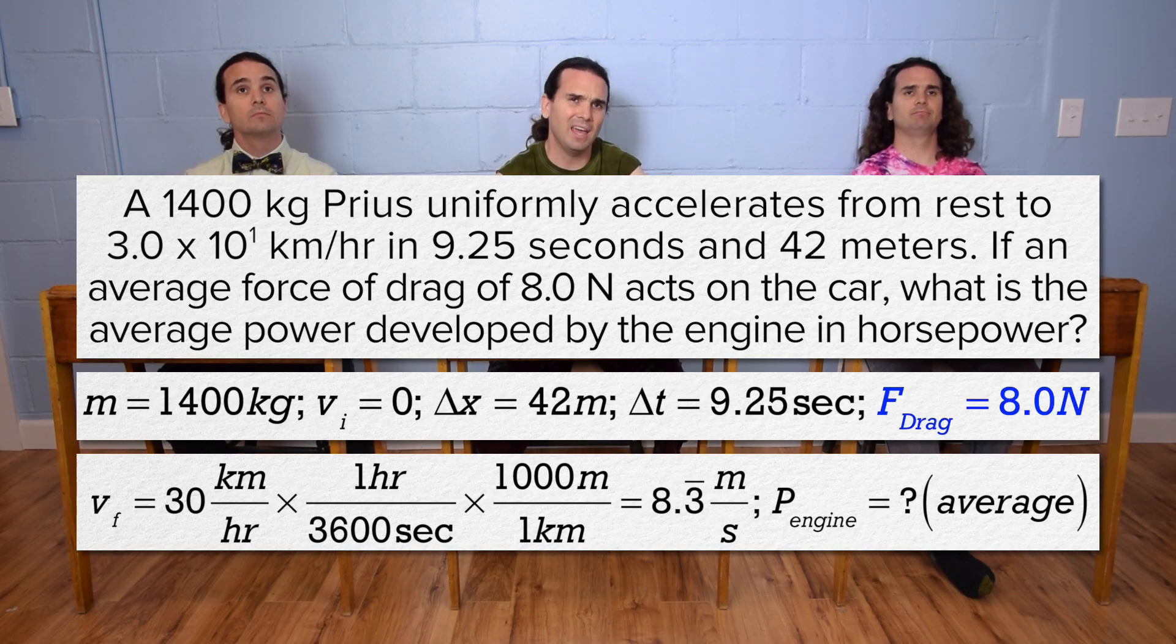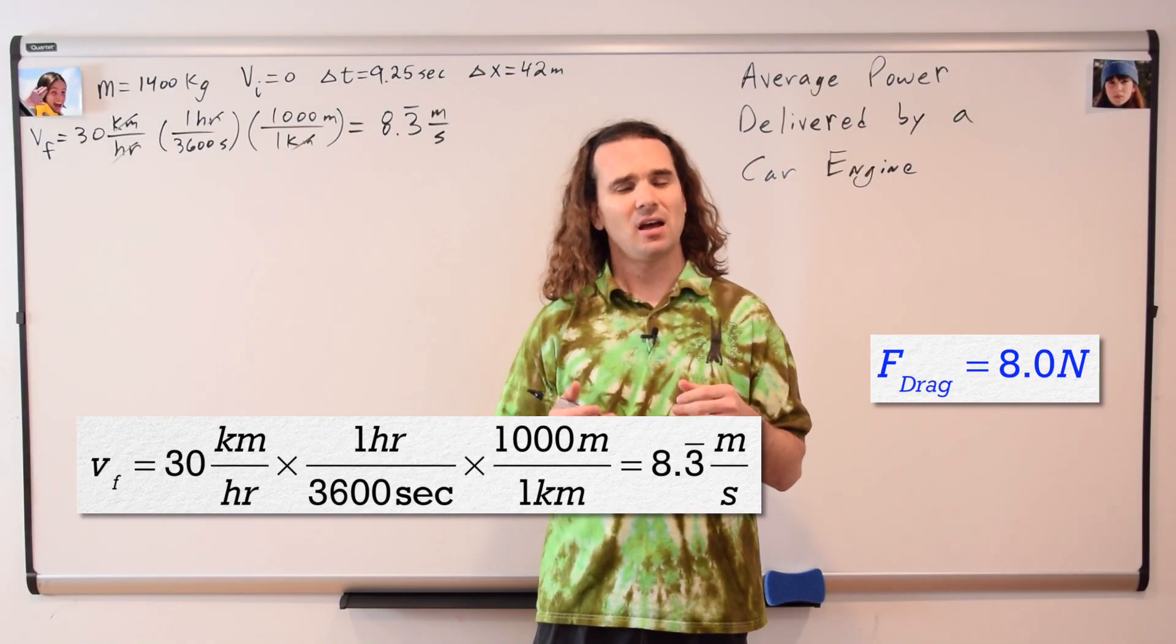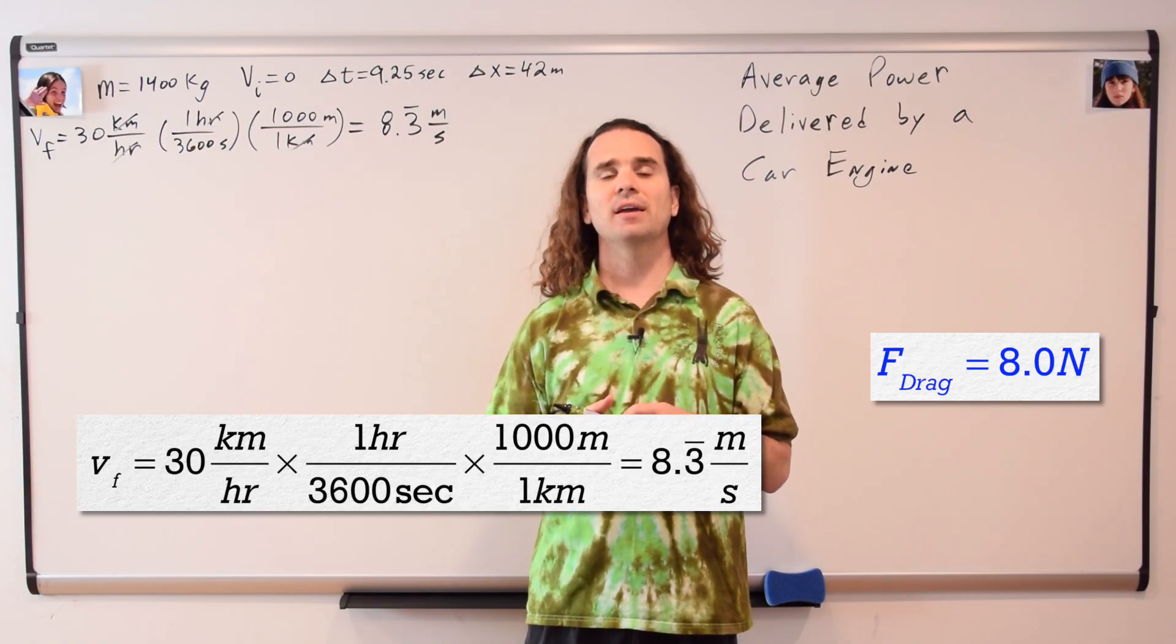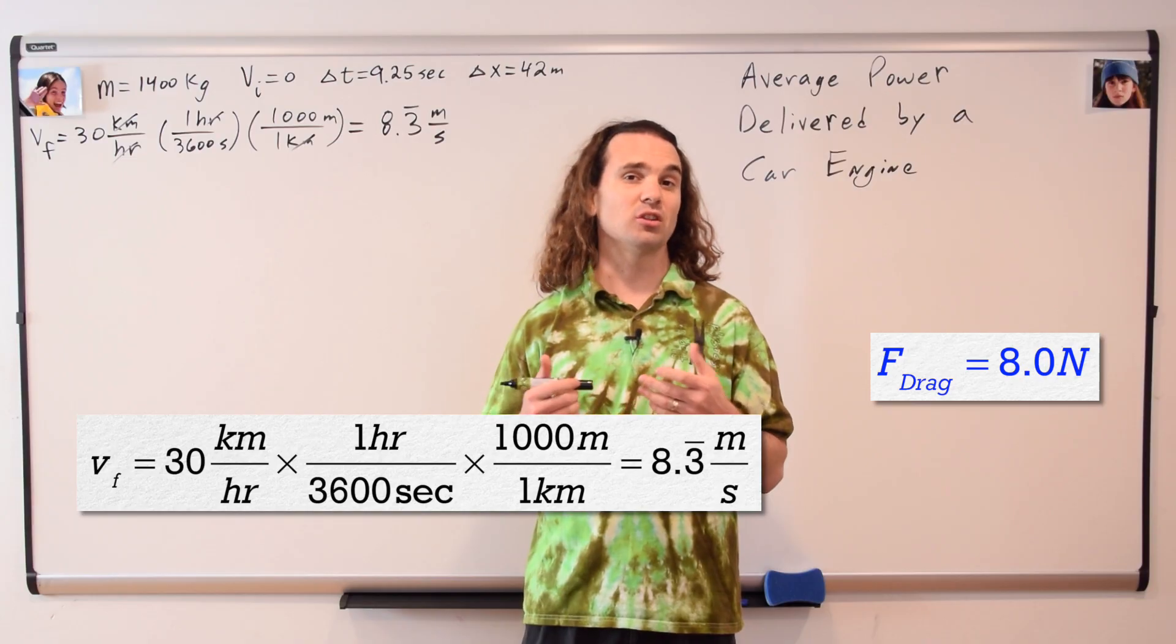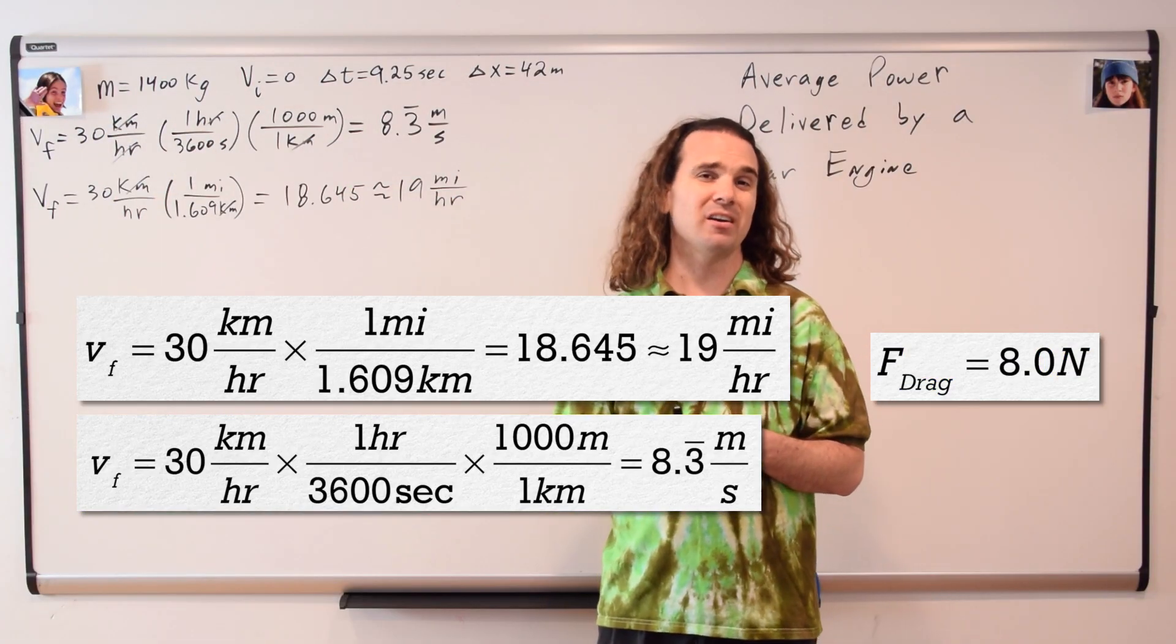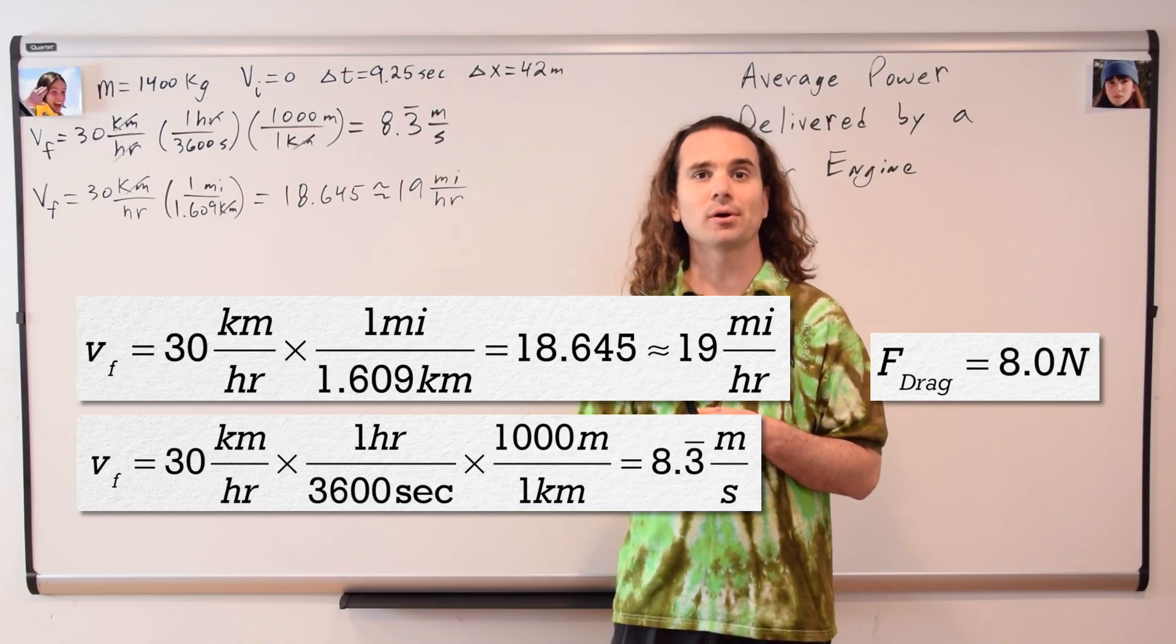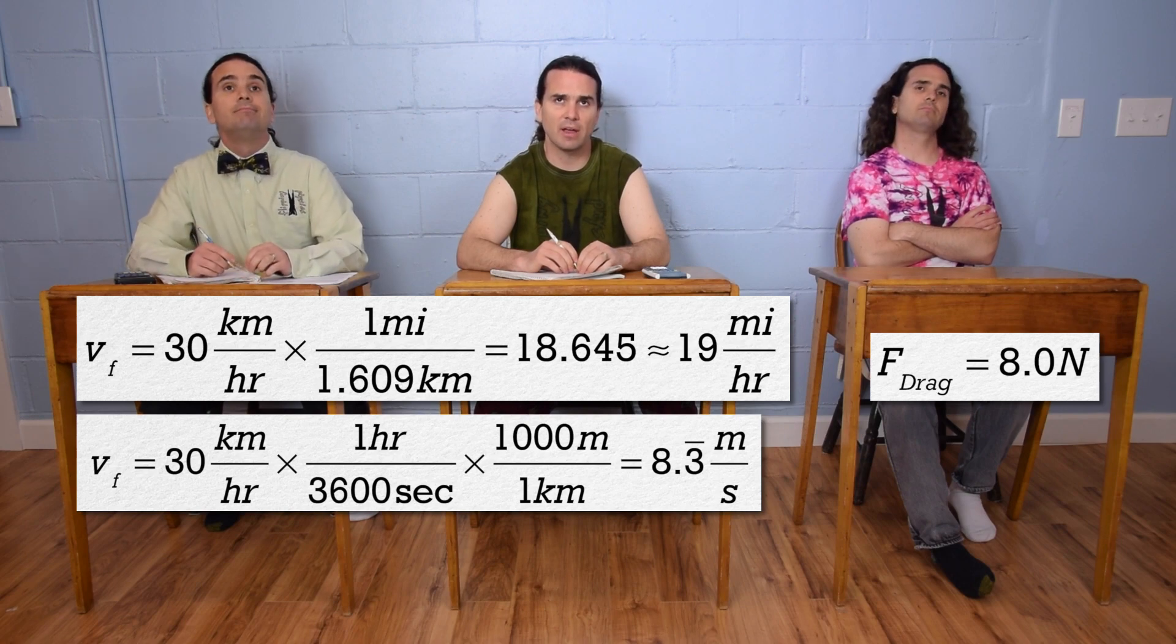A drag force of 8 Newtons seems really small. Is that really correct? Actually, yes. I have an entire video which describes exactly how I determined that average force of drag. The main reason it is so small is because of the car's low speed. The maximum speed of the car is 30 kilometers per hour which is roughly 19 miles per hour. Sure, the car is moving slowly so the force of drag is small.